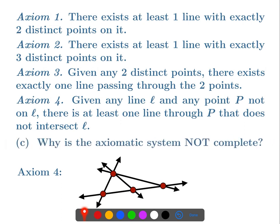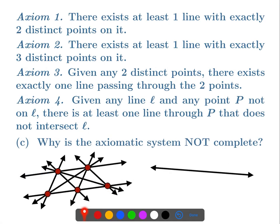Now we want to explain why this axiomatic system is not complete. We go back to our two models from before — the first model by itself, and then that model with an extra line added, both satisfying all four axioms. These two models are non-isomorphic because one has more lines than the other. So the axiomatic system is not complete.